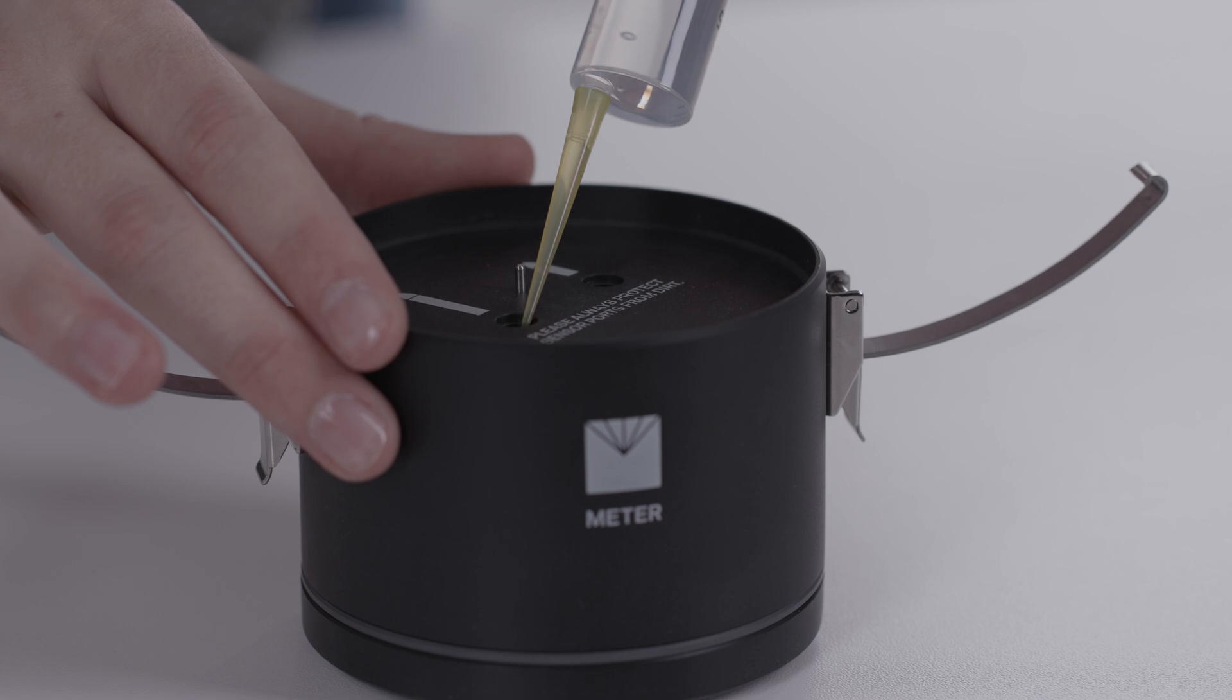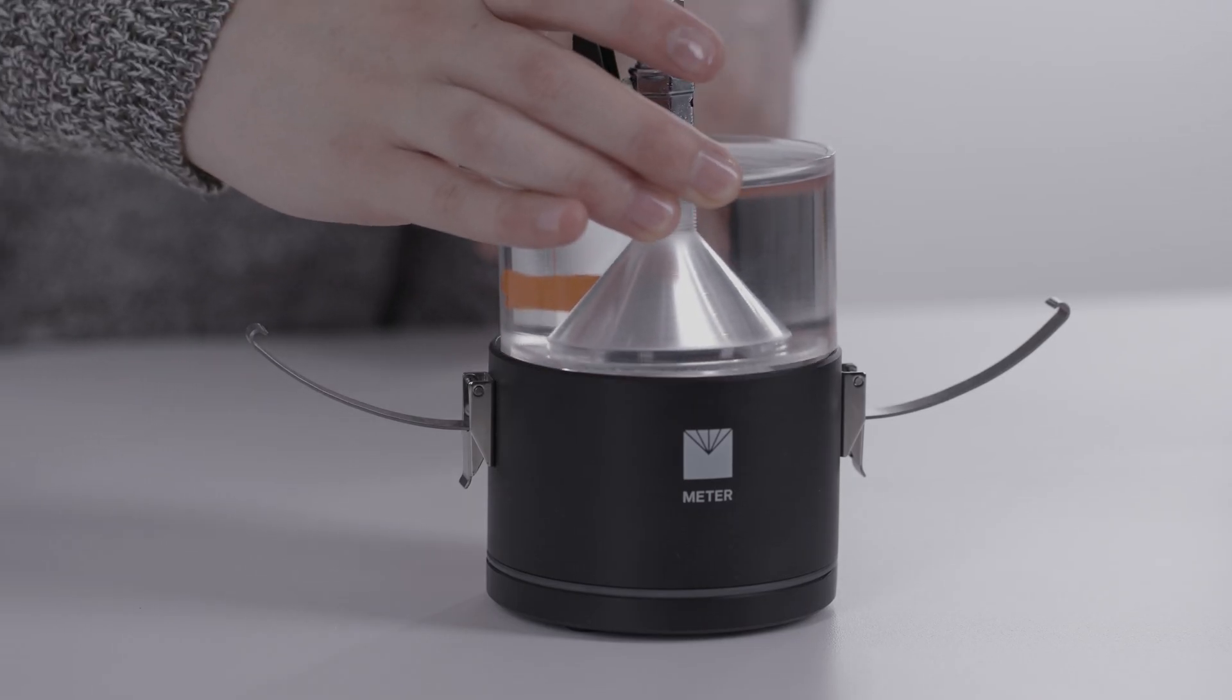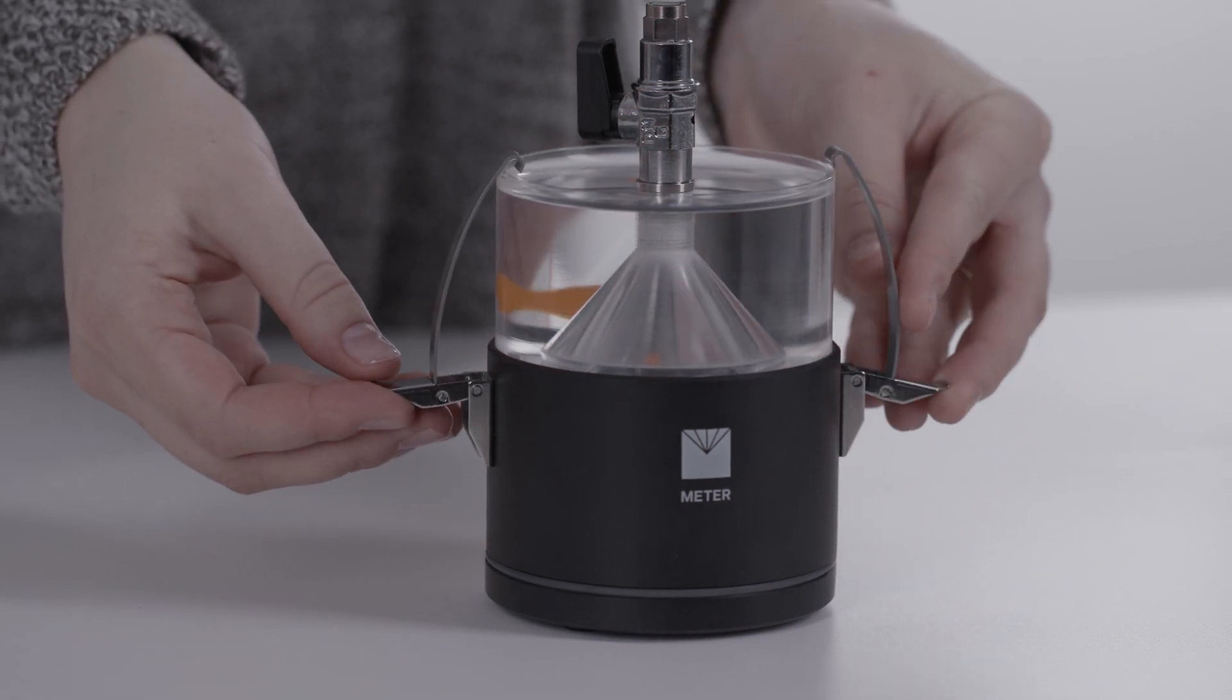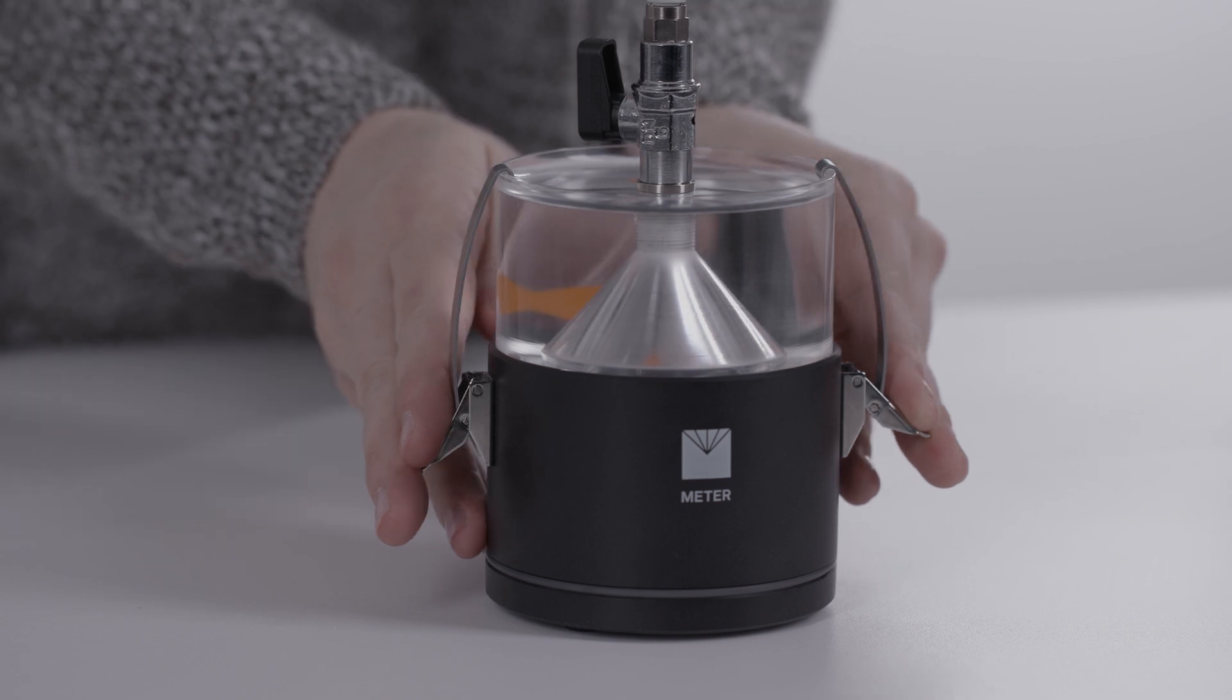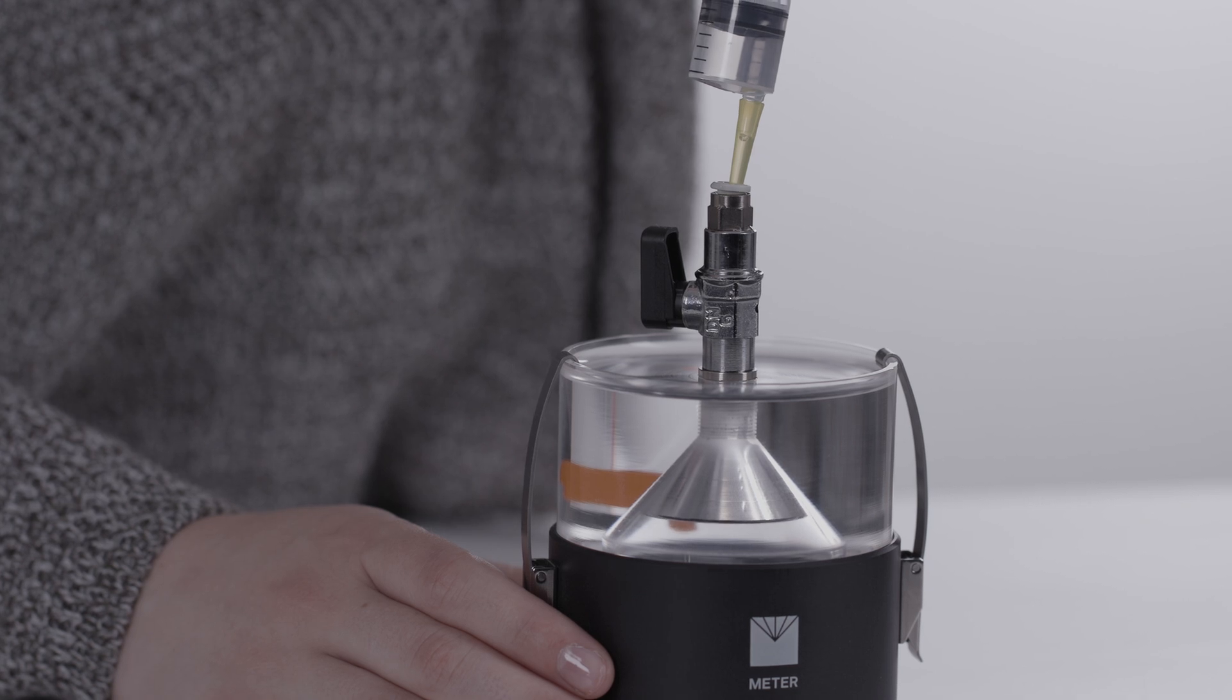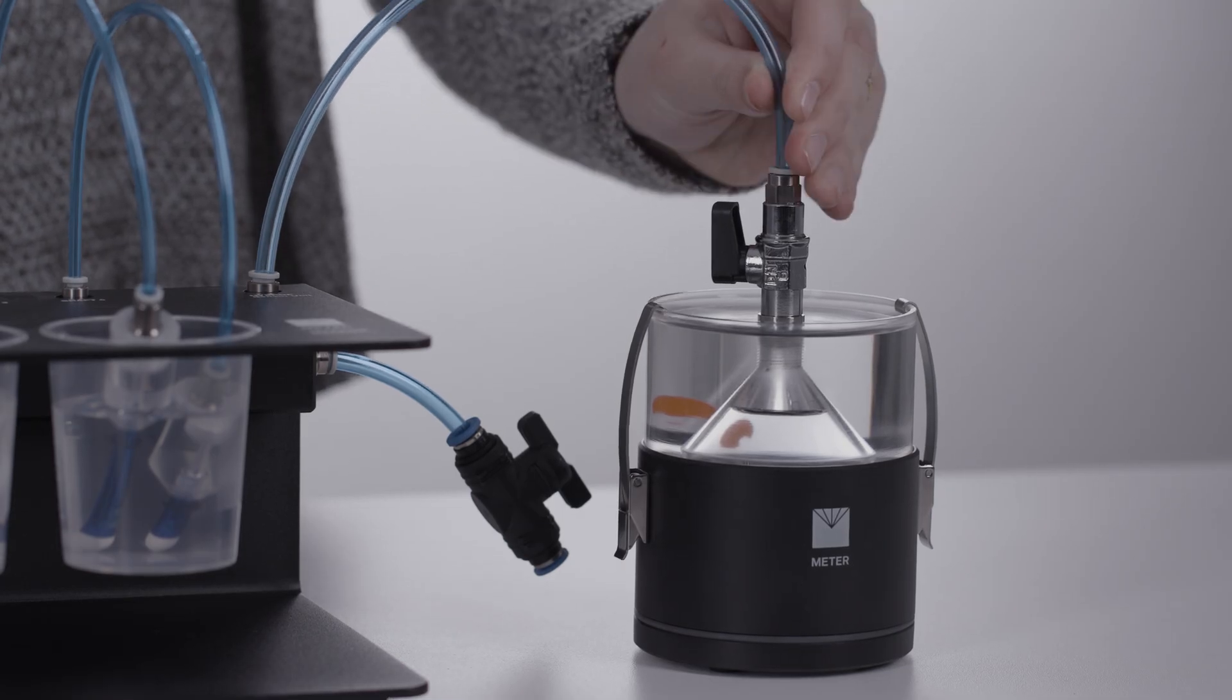Fill holes of the sensor unit with degassed water using the droplet syringe. Place the refilling attachment and clamp it down. Fill the attachment with 23 milliliters of degassed water using the droplet syringe. Attach the high prop to the refill unit.